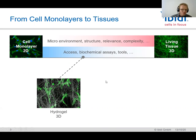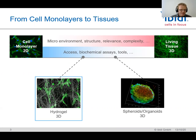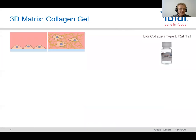The next step towards living tissue in 3D is working with spheroids or organoids, in which the cells themselves build up a three-dimensional structure with even more relevance and functionality. But first, let's stick with the first step — the hydrogel step — and in this case, a very nice system: a collagen gel.